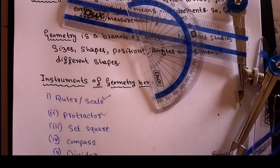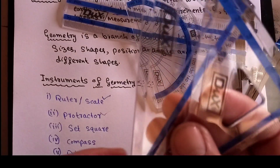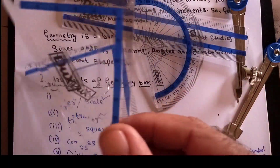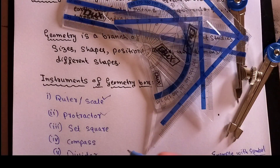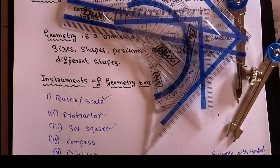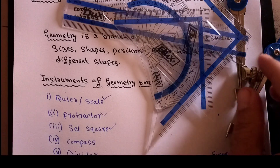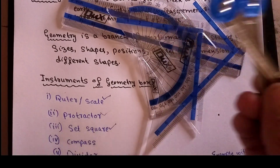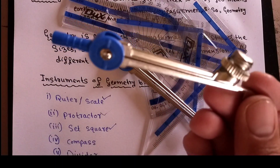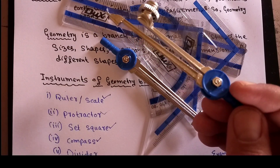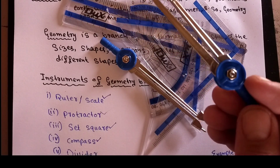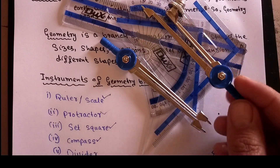Apart from these, there are two more tools. One is in the triangle shape - it is the set square. We place it on the table. With the help of the set square, we can draw parallel lines and perpendicular lines. So we draw parallel lines and perpendicular lines using the set square.